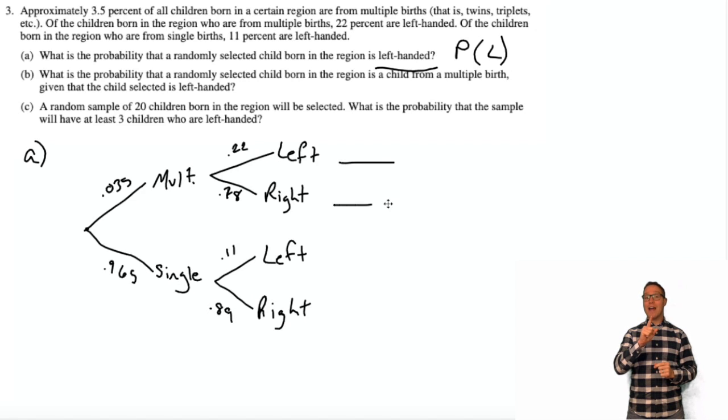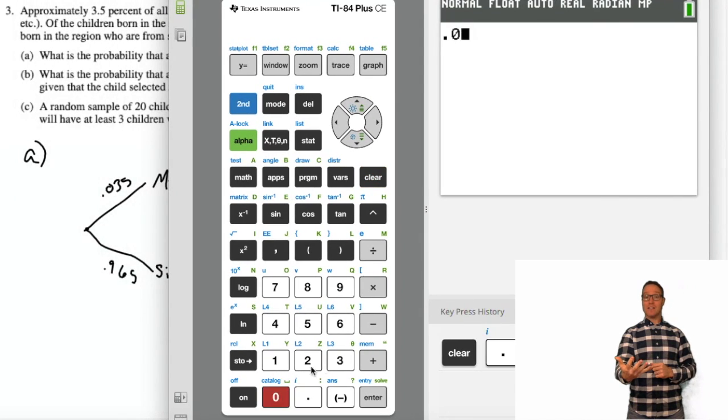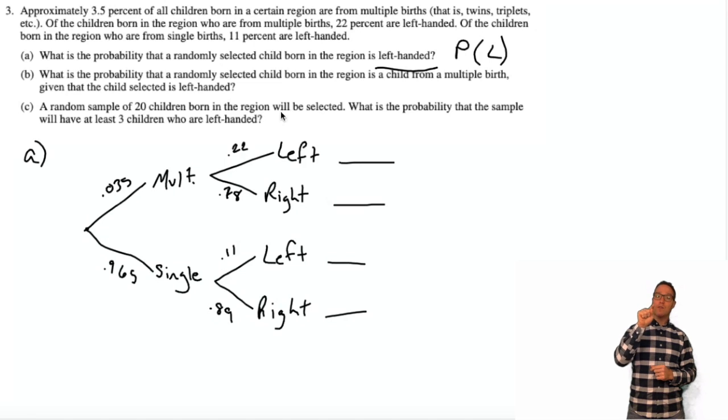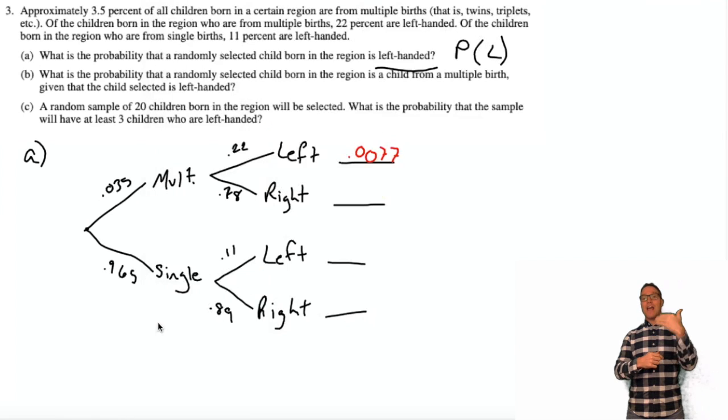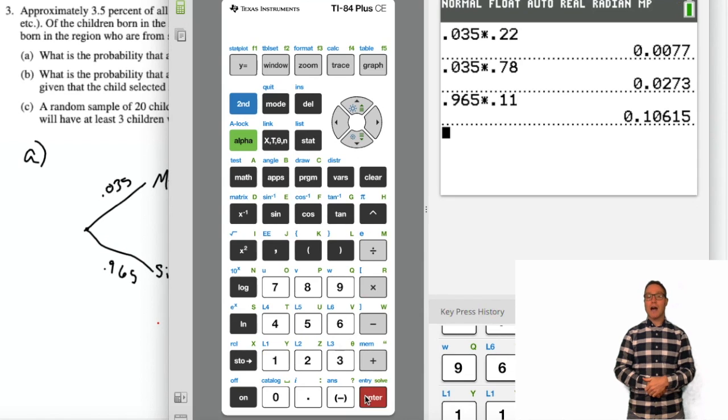Then once you lay all that out, you multiply the branches that lead to the terminal end to get the compound probability. So the probability of being from a multiple birth and left-handed is 0.035 times 0.22, which is 0.0077. So I'm going to go ahead and with my calculator multiply each set of branches so that I get the outcome of those branches. When you do a weighted tree diagram, you lay out each split and you put on the branch of the tree diagram the probability of that outcome. And they have to give you those probabilities, and you should be able to calculate their complement by subtracting from one. So you can see what I'm doing right here is I'm multiplying each set of branches to get the terminal probability or compound probability.